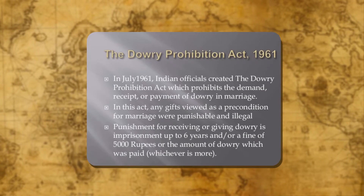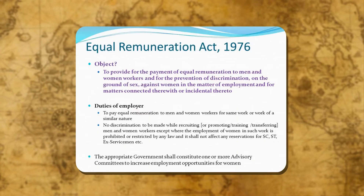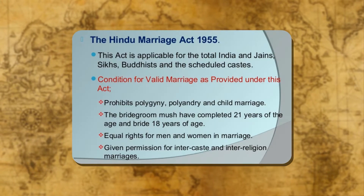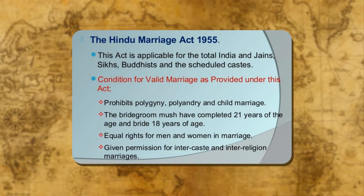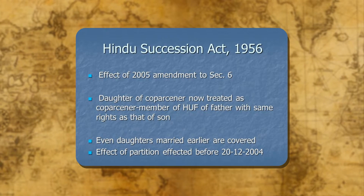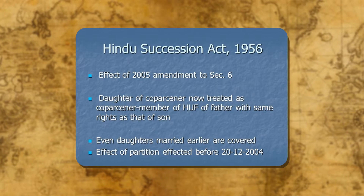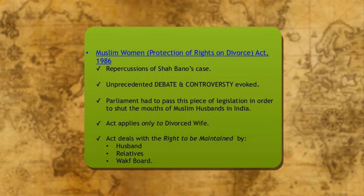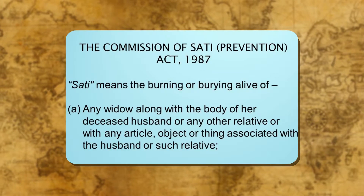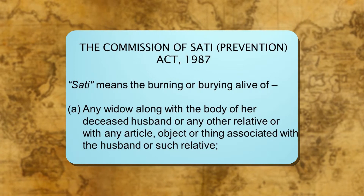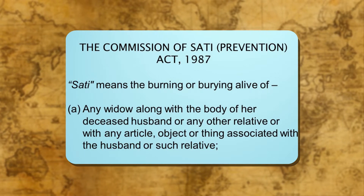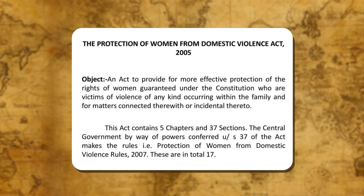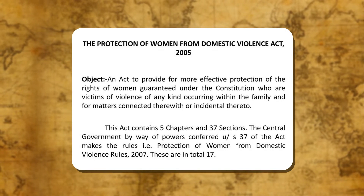For instance, the Dowry Prohibition Act 1961, the Equal Remuneration Act 1986, the Hindu Marriage Act 1956, the Hindu Succession Act 1956, the Muslim Women Protection of Rights on Divorce Act 1986, the Commission of Sati Prevention Act 1987, and the Protection of Women from Domestic Violence Act 2005, etc.